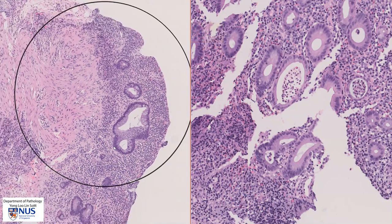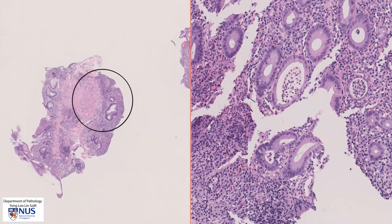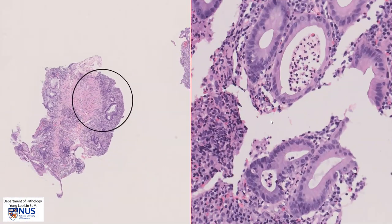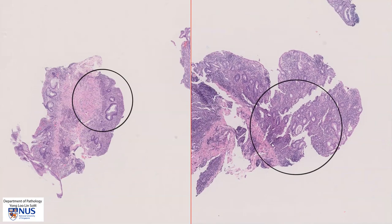It would also be important to look for dysplasia, which can be present in long-standing cases of inflammatory bowel disease and may be a danger sign of potential progression to adenocarcinoma. We do not see any evidence of dysplasia in these two biopsies. Thank you.